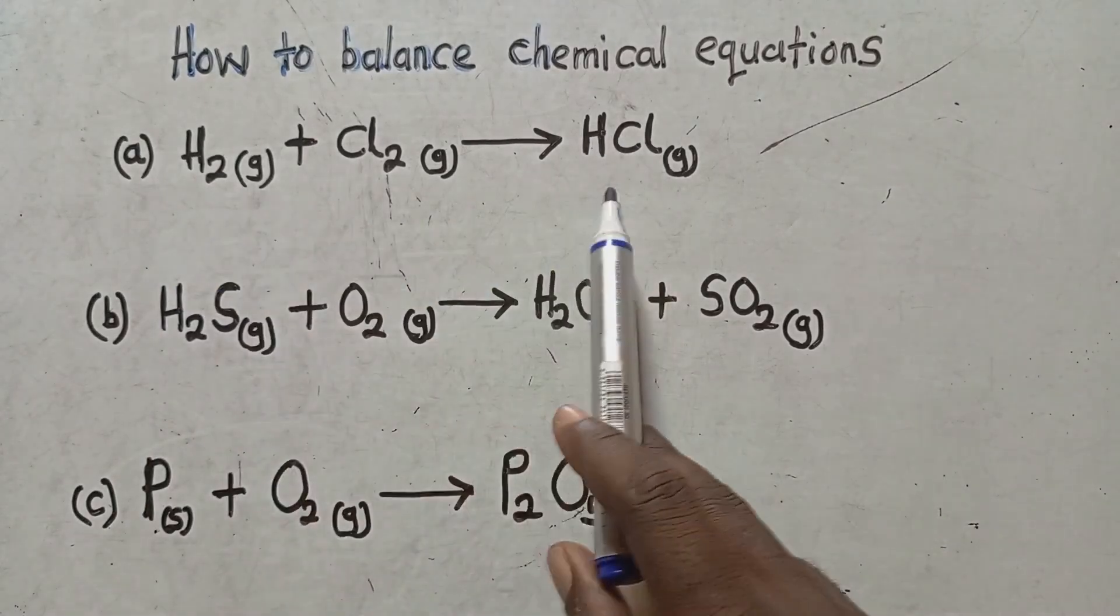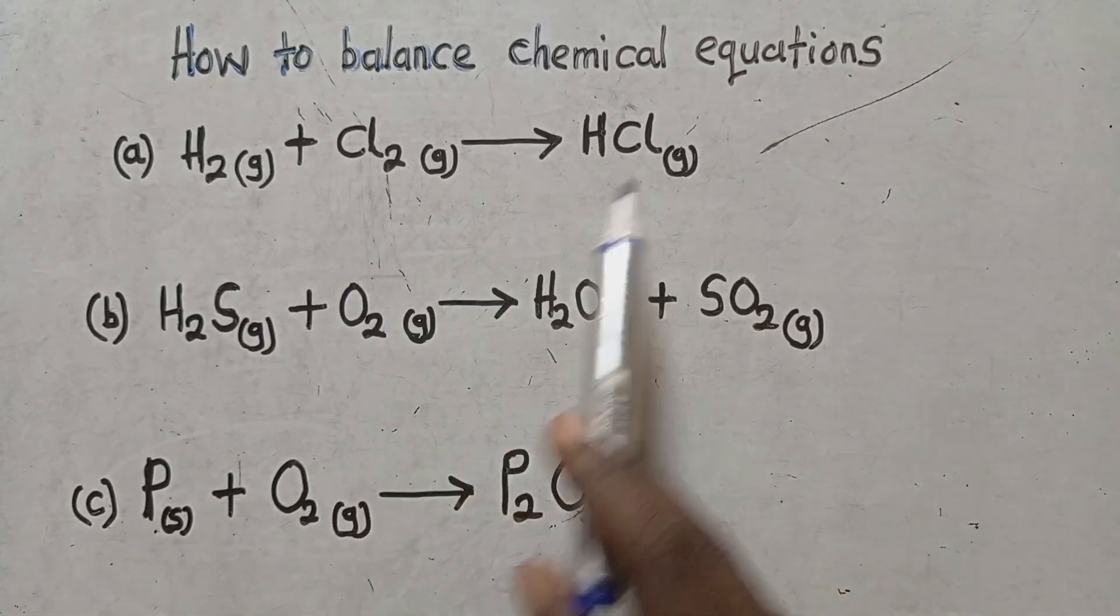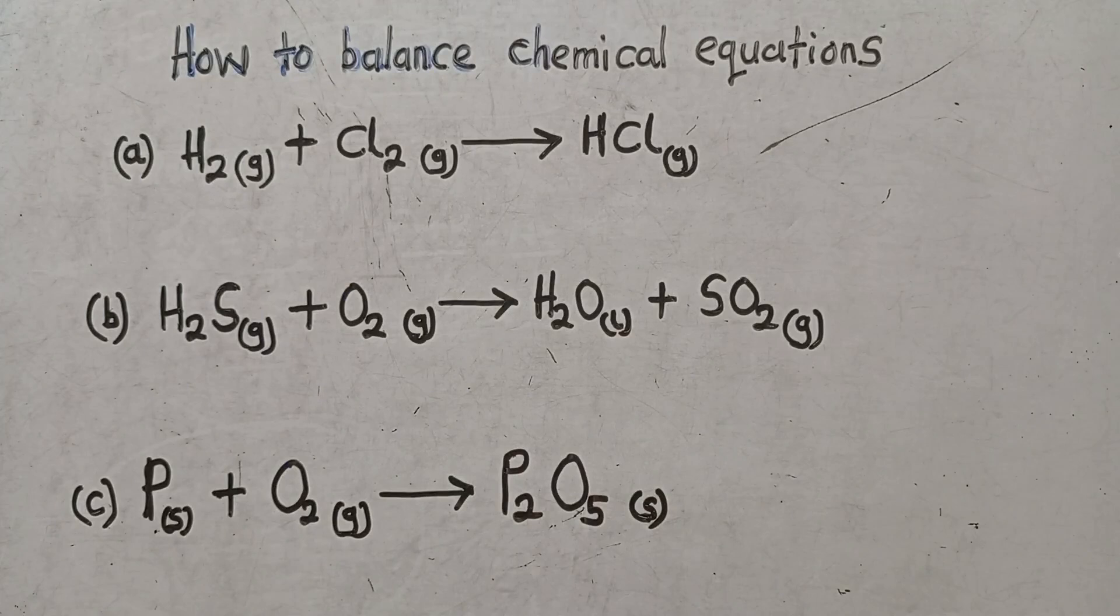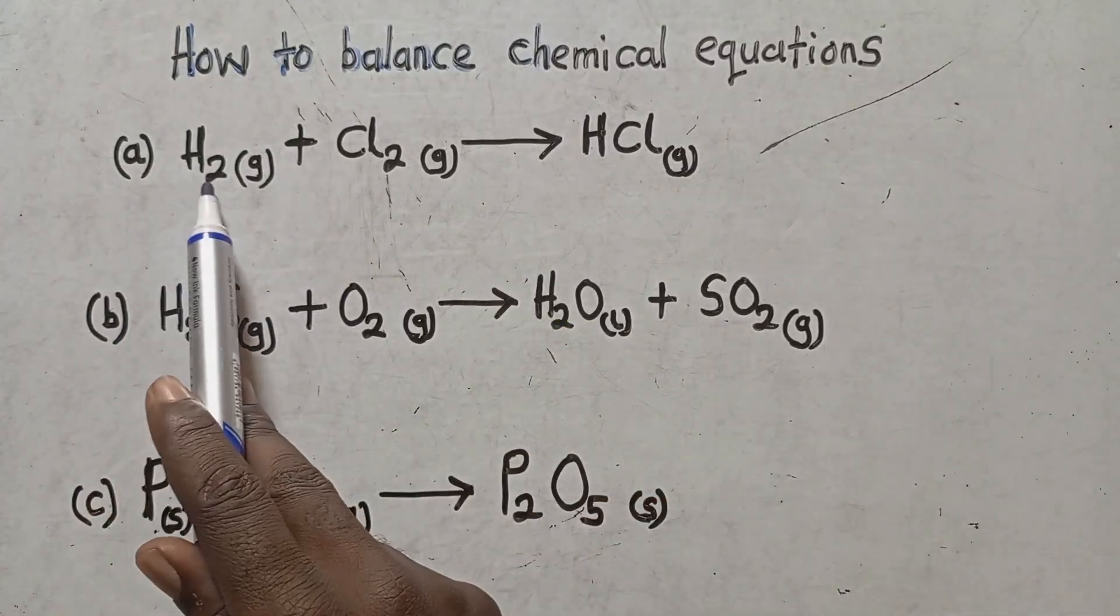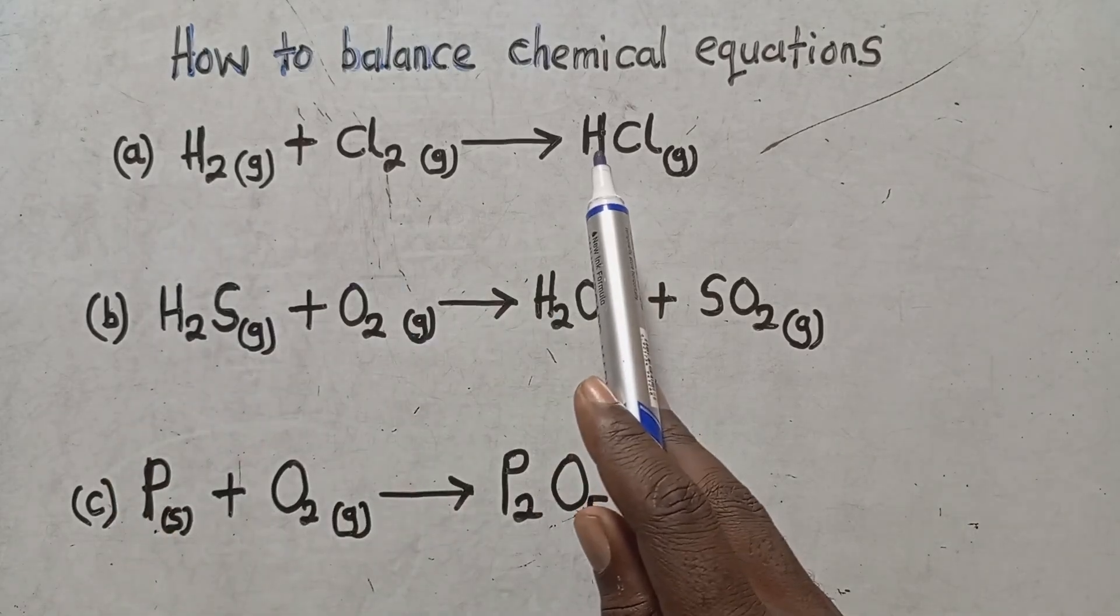So how then do we balance this equation that is here? How can we balance this particular equation? Listen, you ask yourself how many atoms of hydrogens are this side? It's two. How about this other side? It's one.